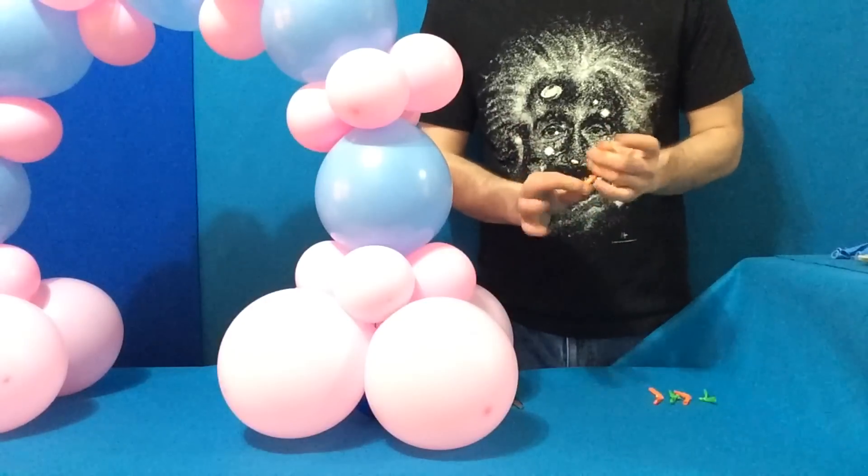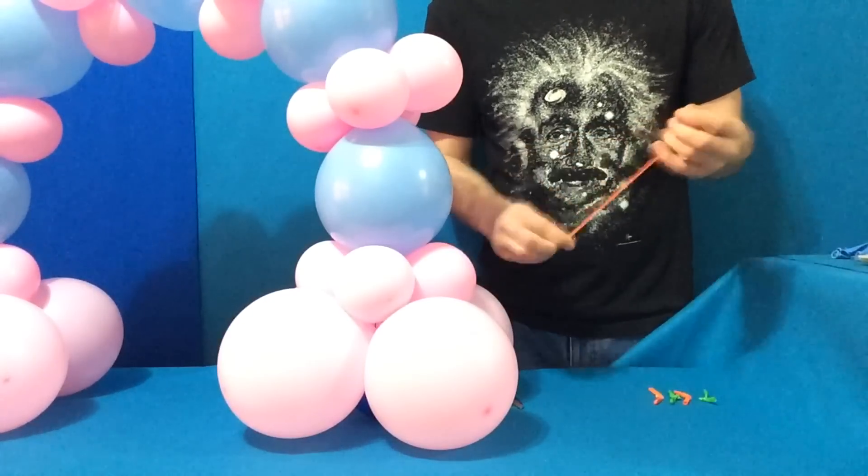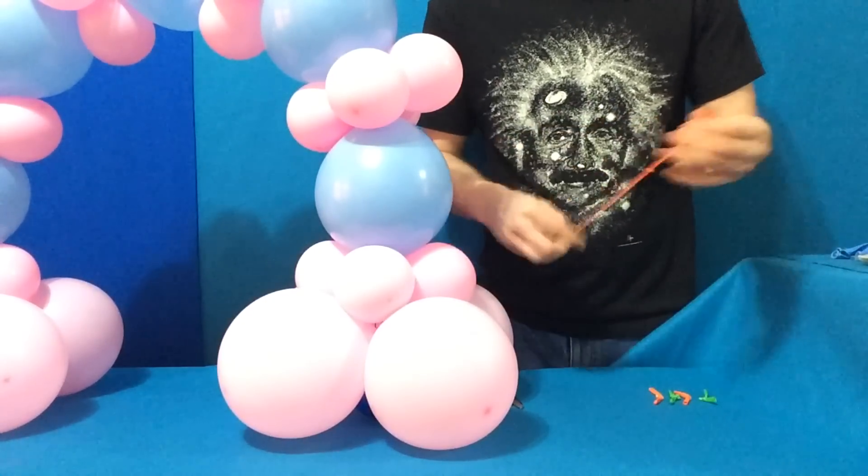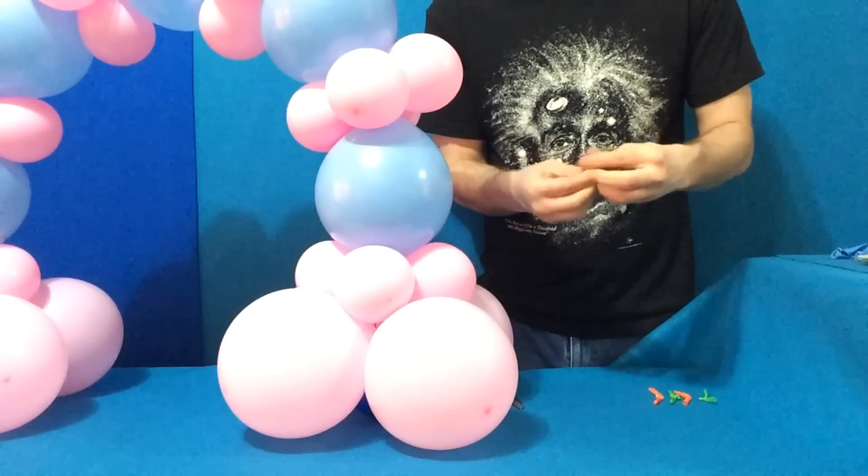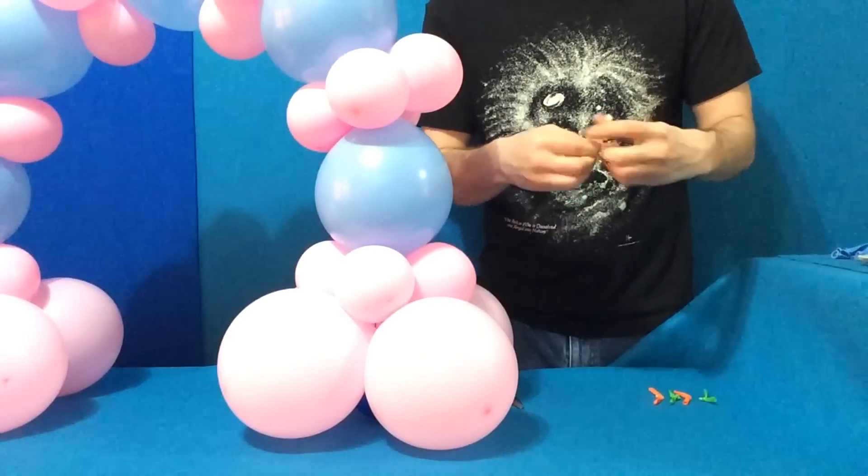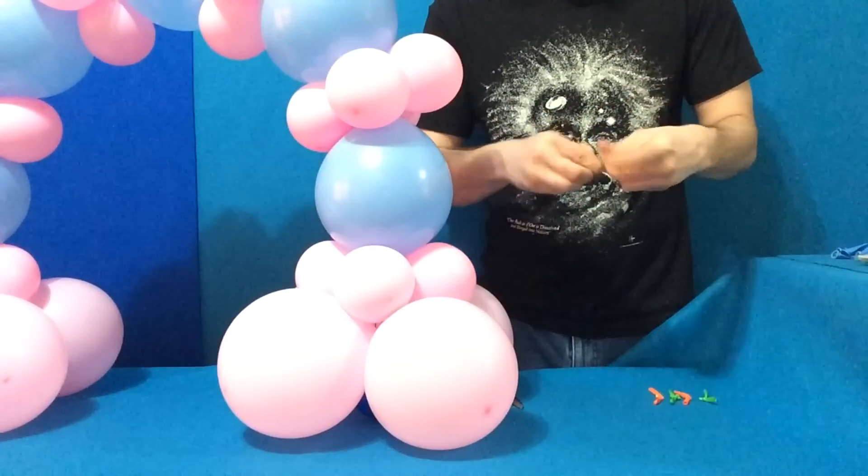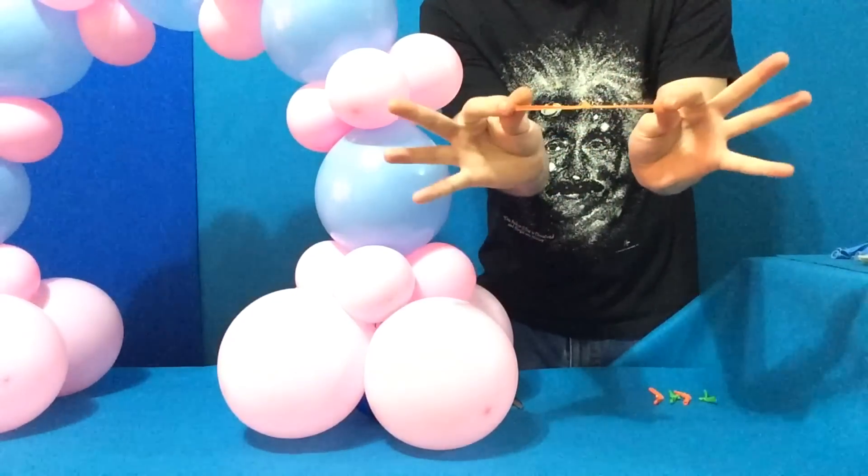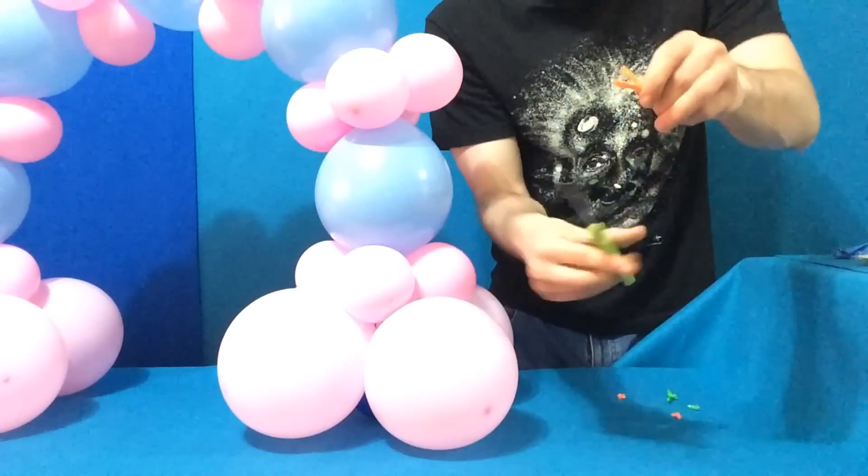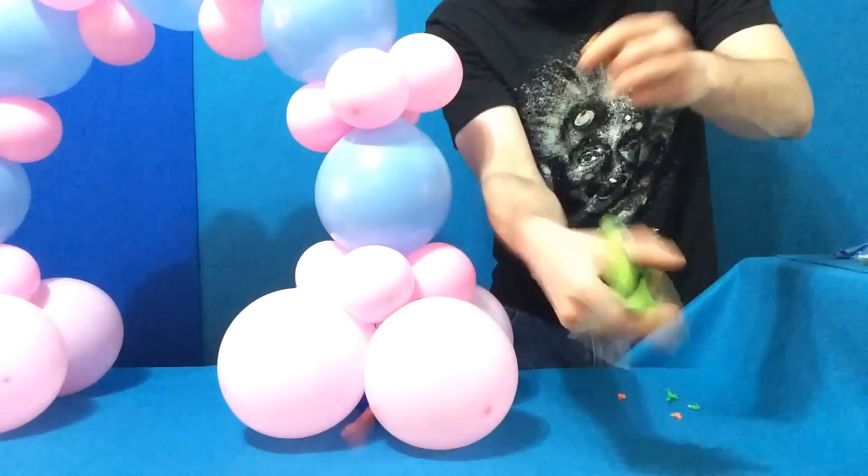Each piece is knotted five times. One, two, all in the same place too, it's a compound knot. Three, four, and five. Then, you just snip off the scraps.